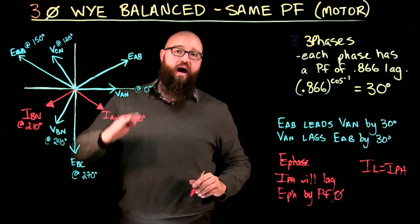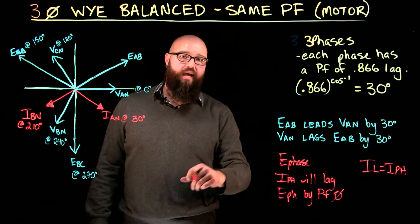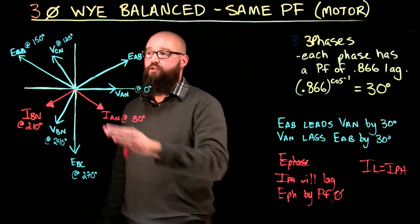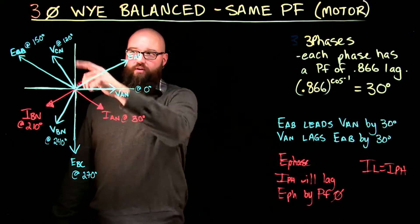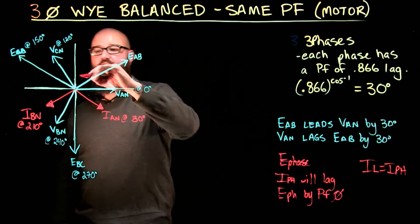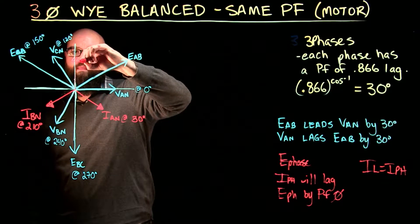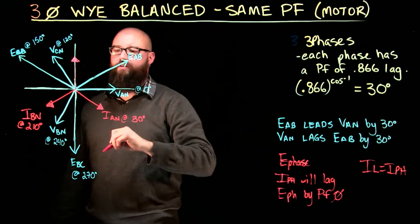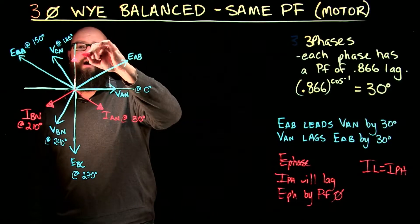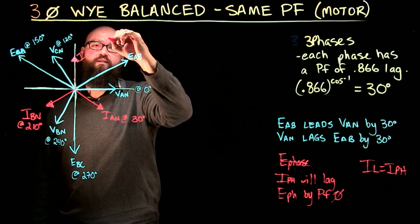And if I plot iC to N, I know that iC to N again has the same power factor, so it should be lagging by the same amount as my other two phase currents. So, iVC to N is at 120 degrees. 120 minus 30 degrees is going to give us 90 degrees. I'm just keeping these phasors roughly the same in magnitude. There's my iC to N at 90 degrees.